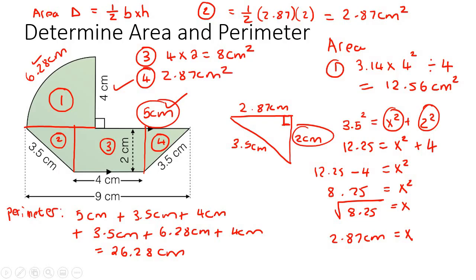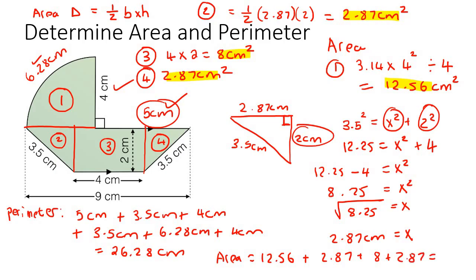Now we just add those four areas together: 12.56 + 2.87 + 8 + 2.87 = 26.3 centimeters squared. Just remember that if you use the pi button on your calculator instead of 3.14, you might get a slightly different answer, so keep that in mind.